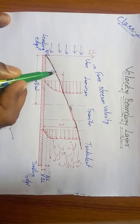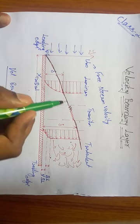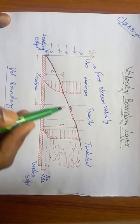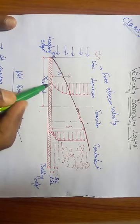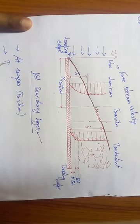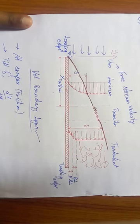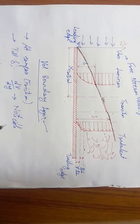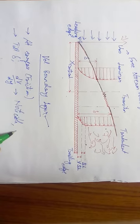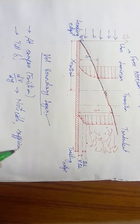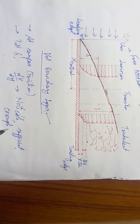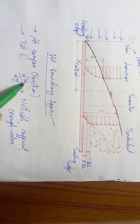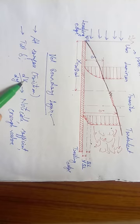The thickness delta defines the velocity boundary layer. Within this thickness delta, dv/dy is noticeable—meaning you will get a sufficient, measurable value. You will be able to notice the change in velocity with respect to distance y, which is dv/dy.